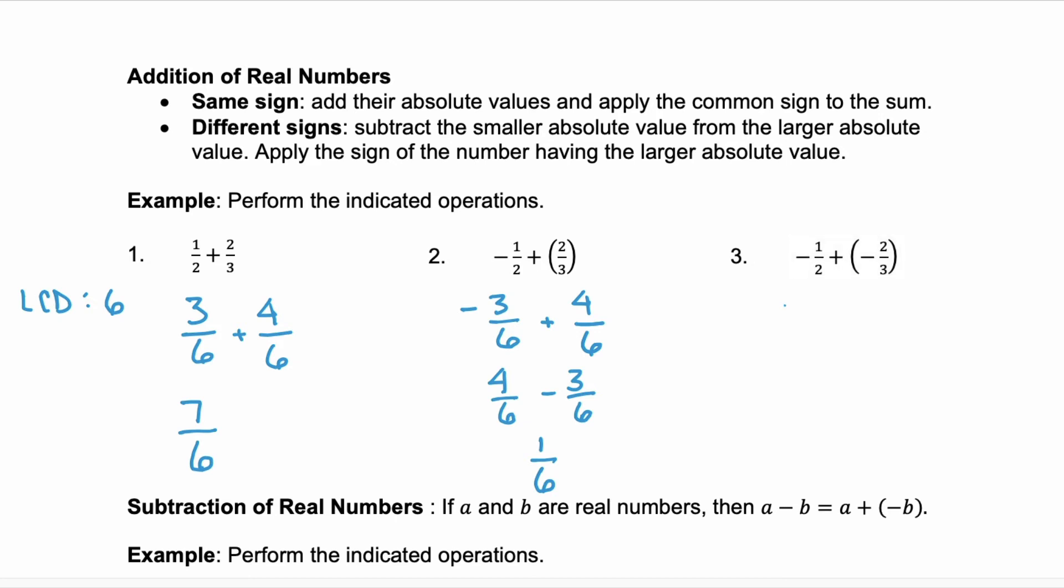Now example 3, we have a negative 3/6 and we're adding a negative 4/6. We're going to add the absolute values of these. So if we add 3/6 plus 4/6, that's what we did in number 1, we get 7/6. But because both of these terms had a negative sign, we're going to apply that common negative sign and we have a negative 7/6.